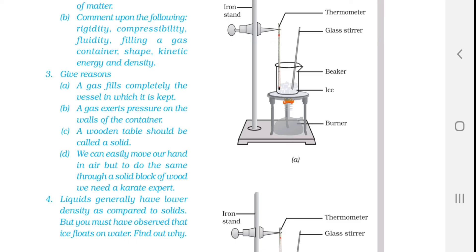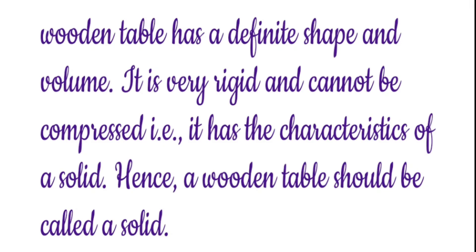A wooden table should be called a solid. A wooden table has a definite shape and volume. It is very rigid and cannot be compressed. It has the characteristics of a solid. Hence, a wooden table should be called a solid.